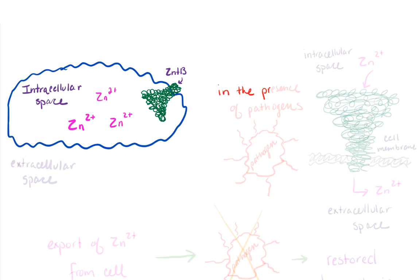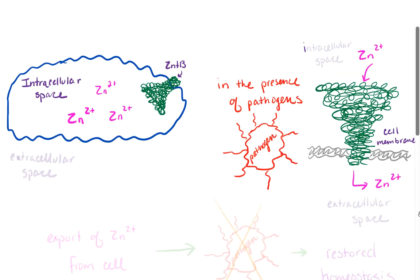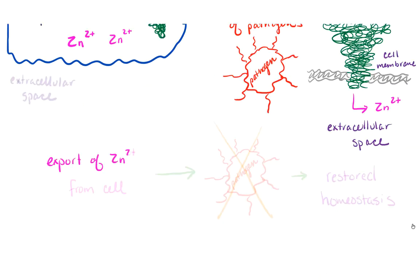Evidence has shown that in the presence of pathogens, divalent zinc is transported from the intracellular space to the extracellular space by ZntB. The export of zinc from the cell by ZntB then suppresses the pathogen viability and cellular homeostasis can be restored.